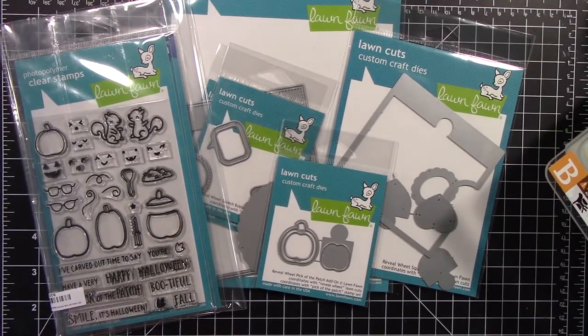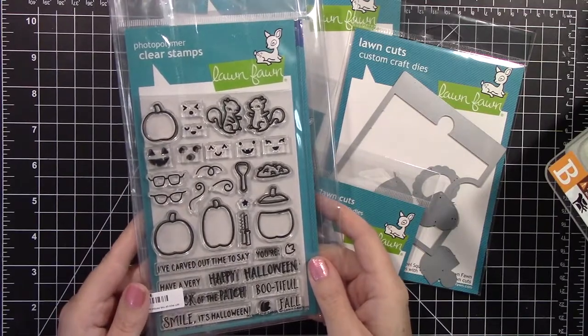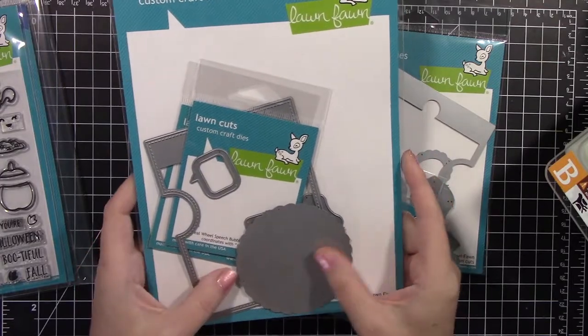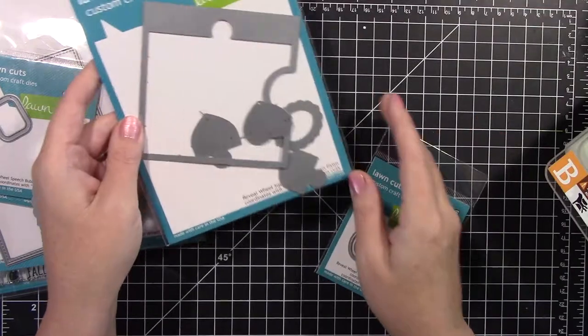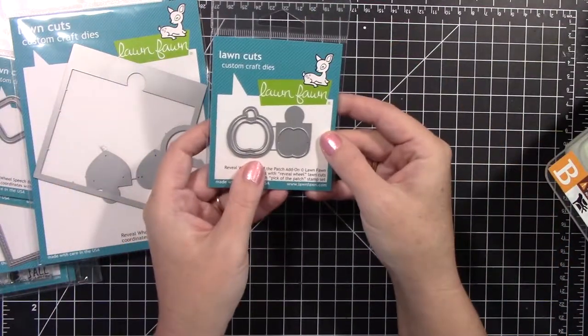So here are the products that I'm using. I'm using Lawn Fawn Pick of the Patch Stamps and Dies, super cute, Lawn Fawn's Original Reveal Wheel because you're going to need the large circle and the small circle out of there, then that is the Square Add-On I'll be using, and then the Pumpkin Add-On.